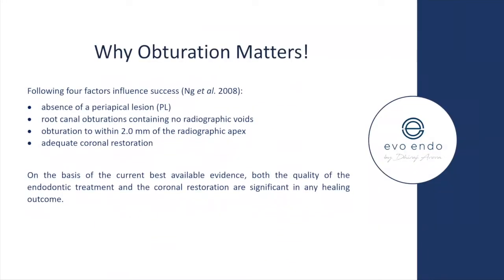Why obturation matters: going back to the heavily cited NGSML paper, four factors influence root canal treatment success — absence of a periapical lesion, root canal obturation free of voids and within two millimeters of the radiographic apex, and an adequate coronal restoration. Both the quality of endodontic treatment and the coronal restoration are significant for healing outcomes. Obturating well without voids and to an appropriate length is very important for successful outcomes.